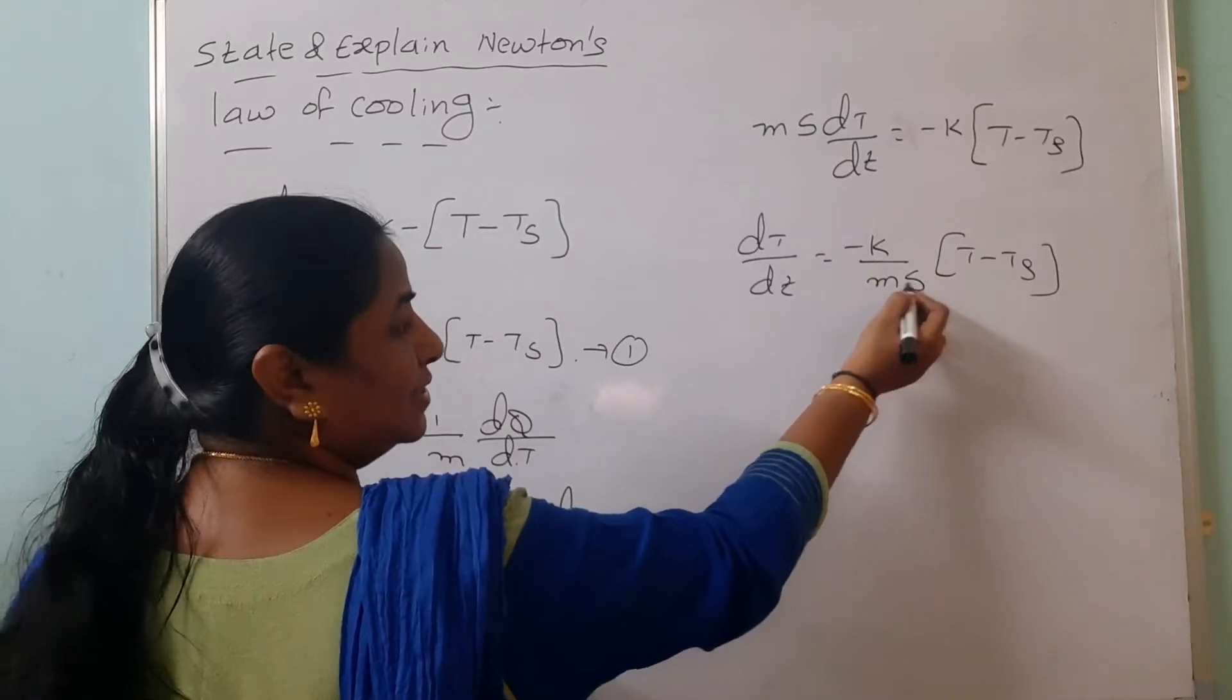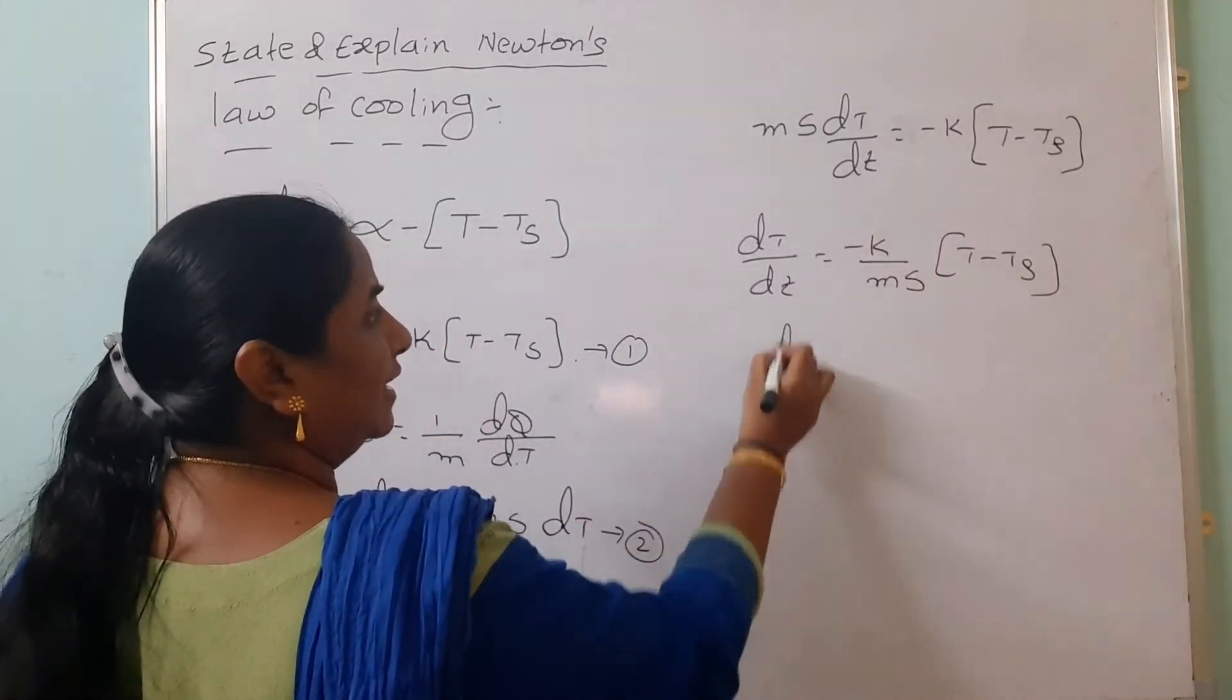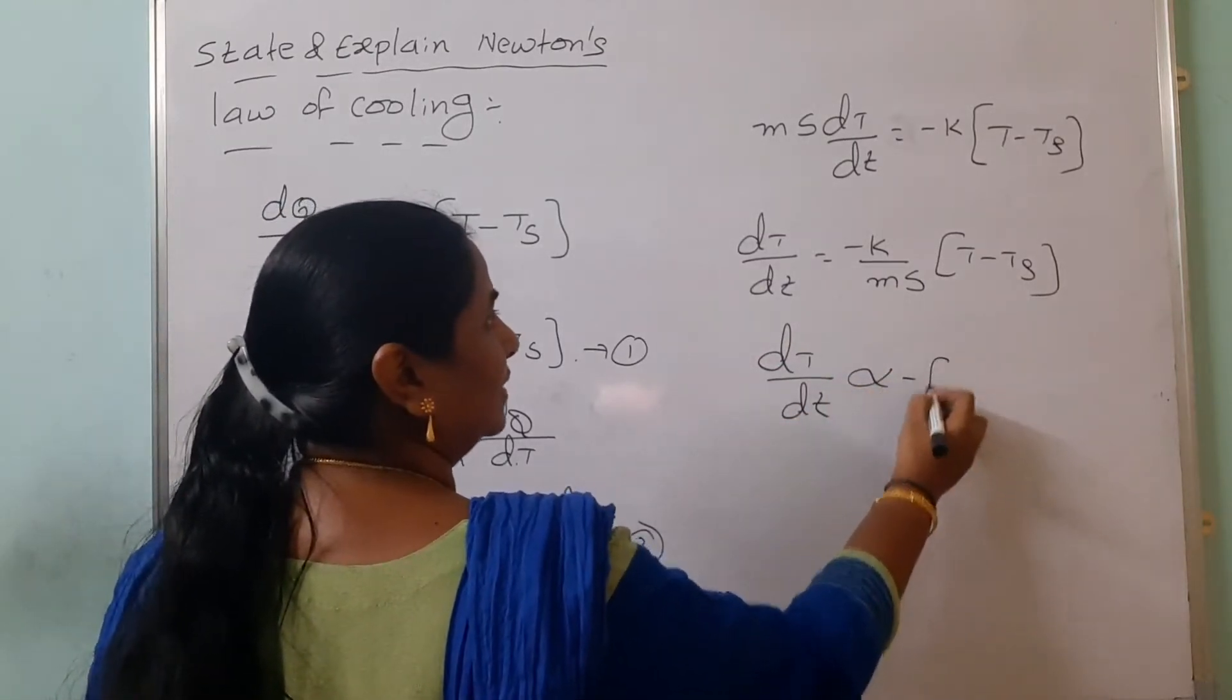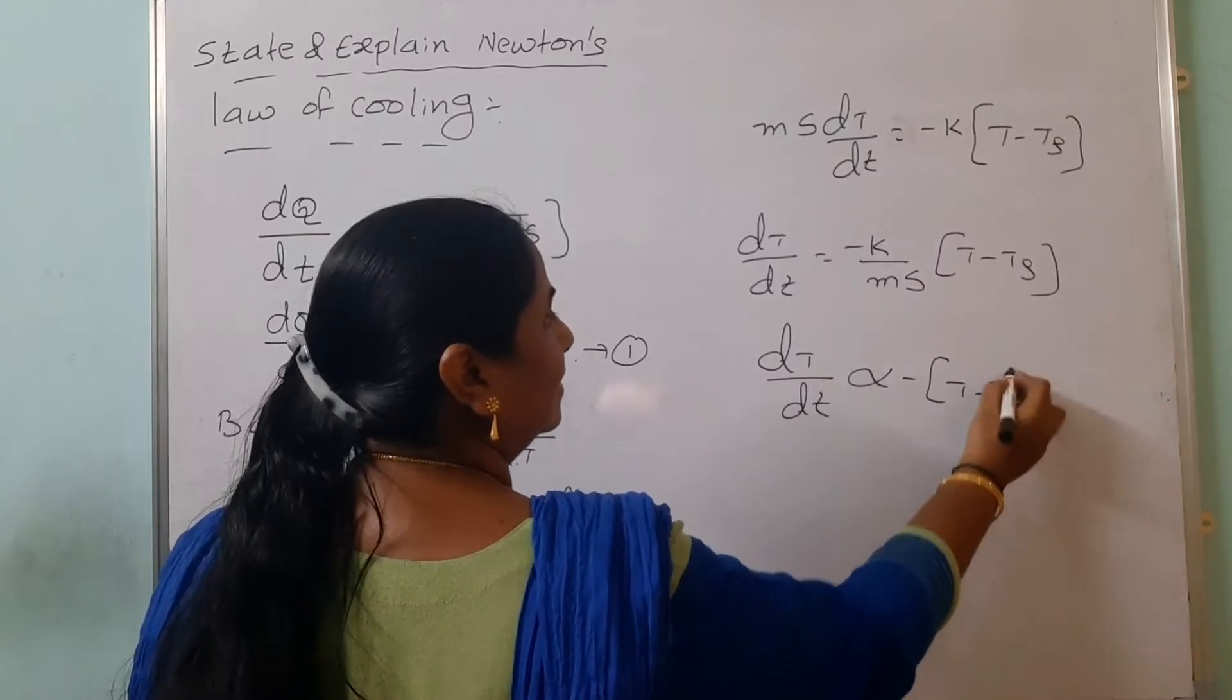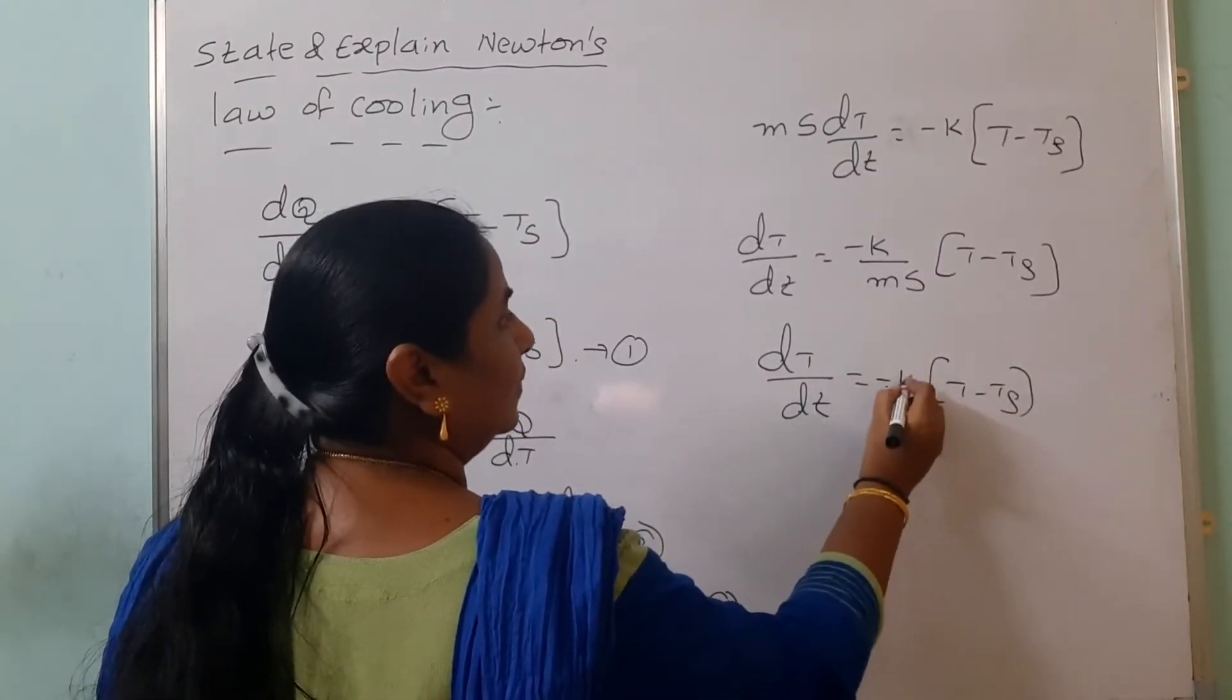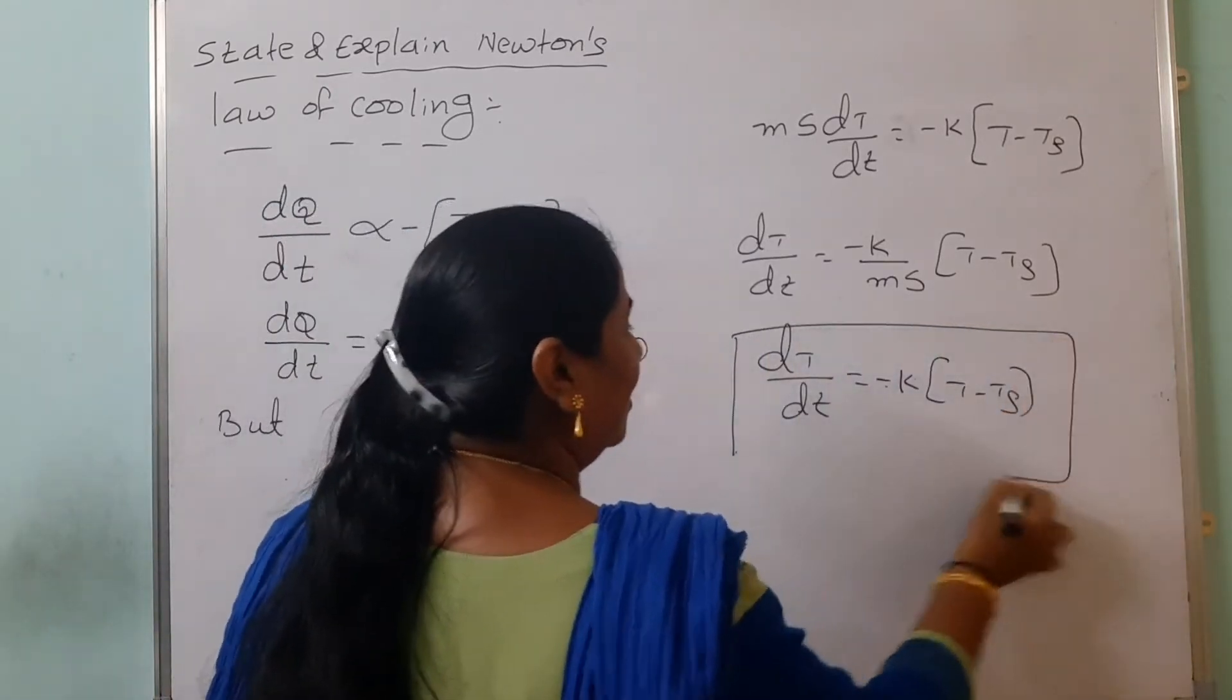Now it should be written DT by dt equals to minus K by MS into T minus TS. See, M is constant, specific heat is constant. Constant by constant, we are getting the constant. When we are removing this, once again we are getting is directly proportional to T minus TS. Otherwise, if you want to mention that minus K into T minus TS. So this is Newton's law of cooling.